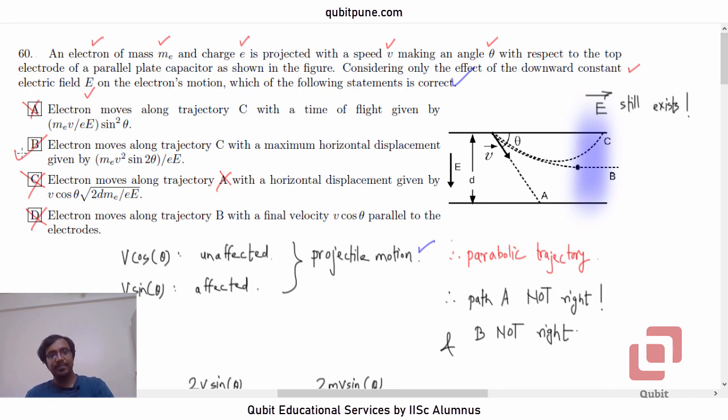So, question 60, option B and that completes our physics 2017 of IISR aptitude test. If you are new to our channel, let me tell you that Qubit Education Services is the only channel that is providing detailed solutions of all IISR aptitude tests since its inception that is 2017. Please check link in the description or you can also see a card which will take you to the link to all solved previous questions of IISR aptitude test. So, thank you for watching and all the best for your exam. Thank you.